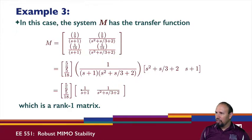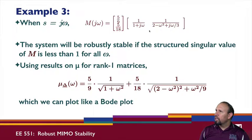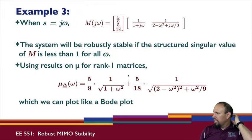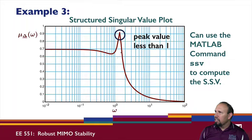The transfer function factors as a column times a row — that's a rank-one matrix. Recall that a rank-one matrix is one of the few cases where we can actually calculate the structured singular value analytically. Using the SSV formula for rank-one matrices, we get an expression for mu as a function of omega. Plotting mu versus frequency in a Bode-like plot, we see it rises and peaks at a certain value.